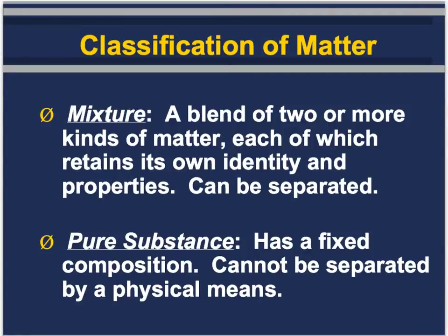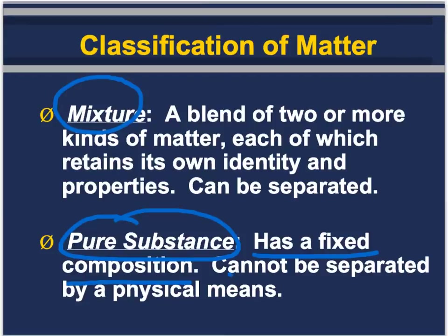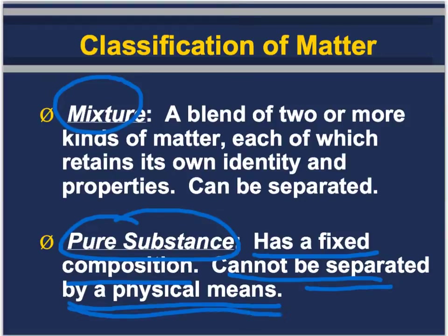Now that we've talked about the various states of matter, we're going to talk about how we specifically classify matter. Matter can be classified as a mixture or a pure substance. A pure substance has a fixed composition and cannot be separated by physical means. A mixture, on the other hand, is a blend of two or more kinds of matter, each of which retains its own identity and properties, and it can be separated, generally by physical means.